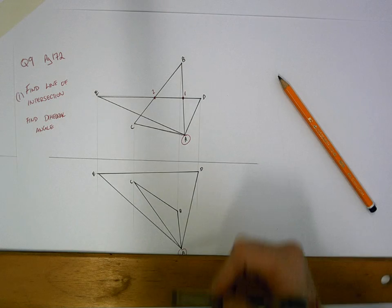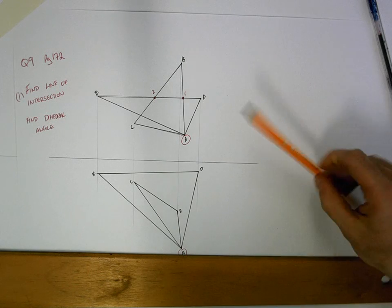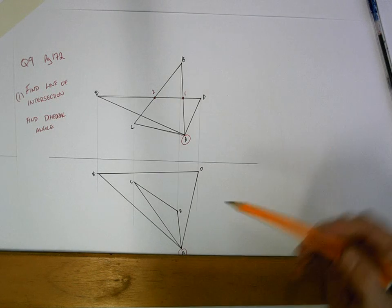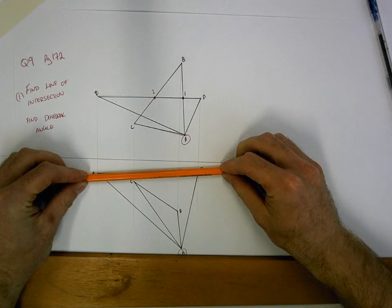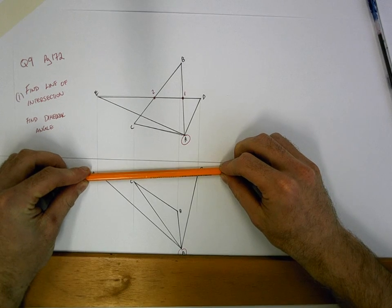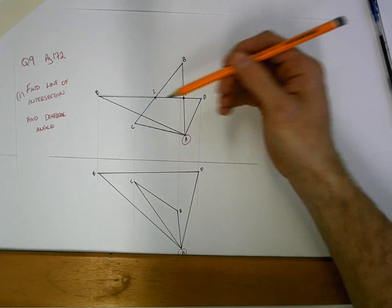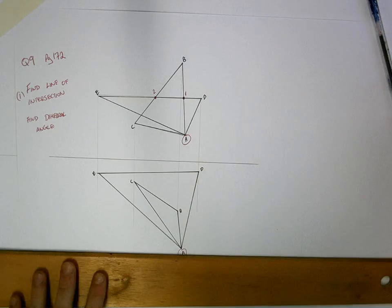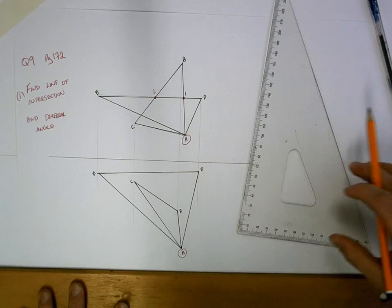We're then going to find those in plan view and recreate them. So D to E is already drawn in plan view, that's the line there. That's half the work done. The second line is going from 1 to 2. So we're going to find point 1, find point 2, and join them together.